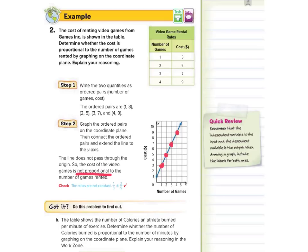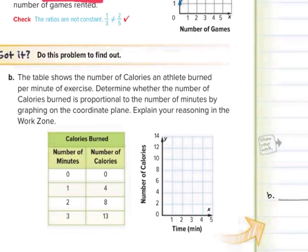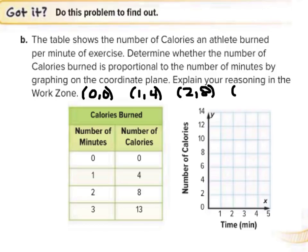The table shows the number of calories an athlete burned per minute of exercise. Determine whether the number of calories burned is proportional to the number of minutes by graphing. We rewrite these as ordered pairs with minutes on the x-axis and calories on the y-axis: (0,0), (1,4), (2,8), and (3,13).